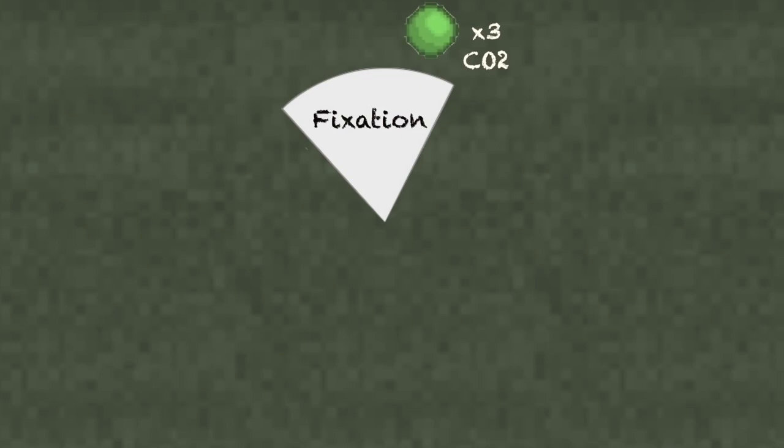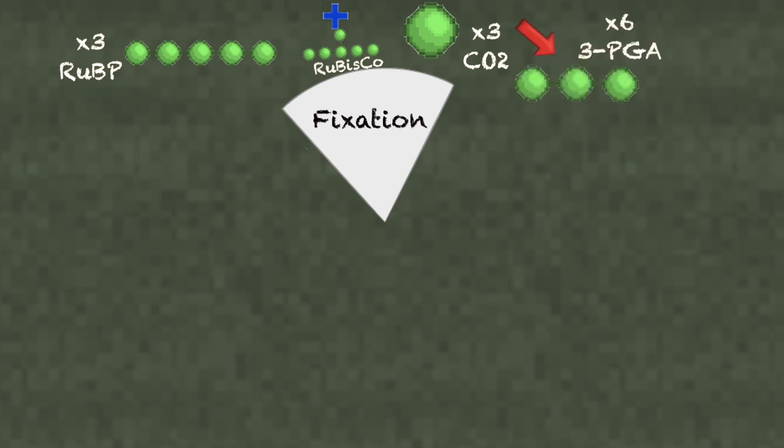In fixation, three molecules of carbon dioxide from the air react with three molecules of RUBP, also known as ribulose bisphosphate, a sugar with five carbon atoms and two phosphates. These are catalyzed by the enzyme Rubisco. An enzyme is a molecule that speeds up chemical reactions. These two use Rubisco to produce six molecules of 3-PGA or 3-phosphoglyceric acid, which has three carbons and one phosphate.